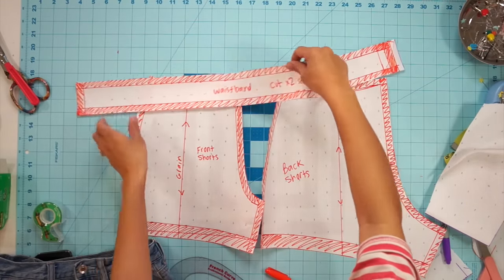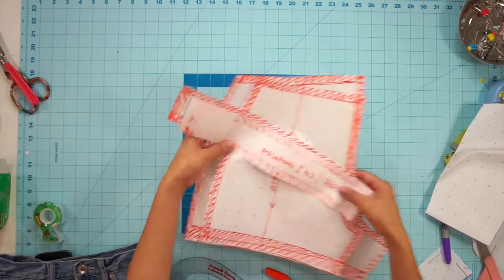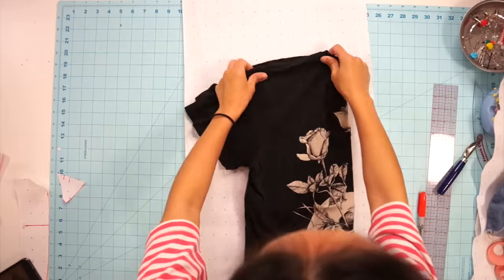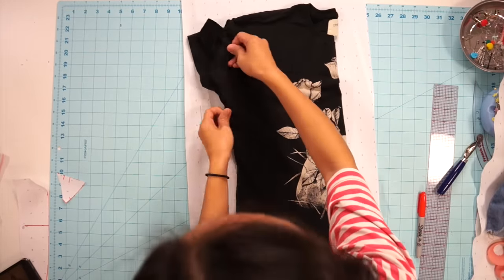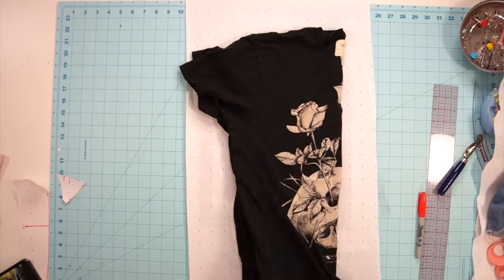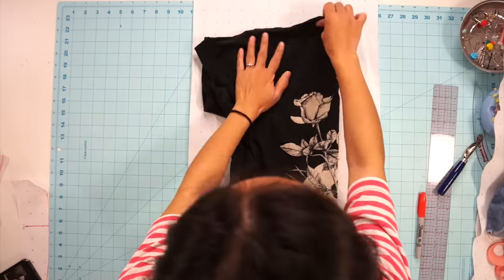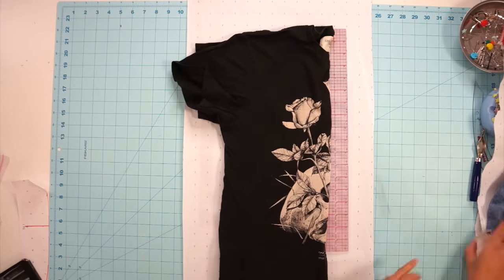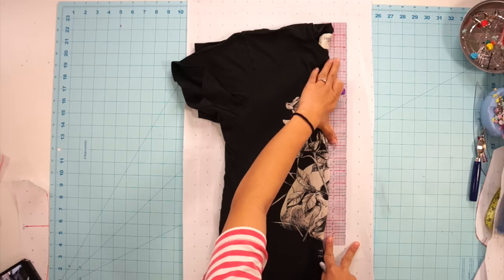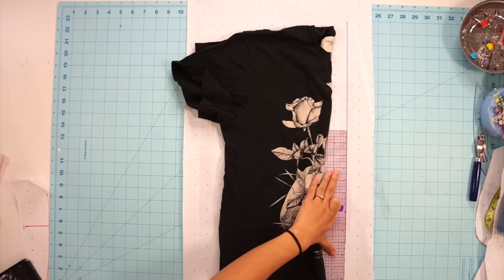Front shorts, back shorts and the waistband. The next item I'm going to show you how to trace is a t-shirt. Once again fold your item in half and always make sure the seams of the clothes is laying flat so you can accurately trace it. Since this will be cut on fold I draw a straight line for the center front. A yardstick would be really useful for doing this so your line doesn't move.